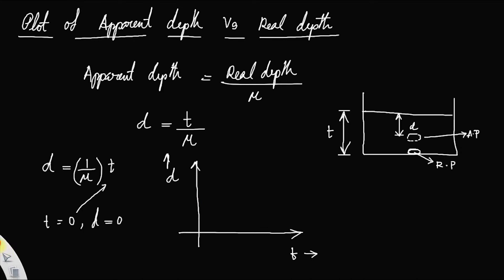This is the graph, it will be a straight line. And how will you find the slope? This is the plot of apparent depth versus real depth.